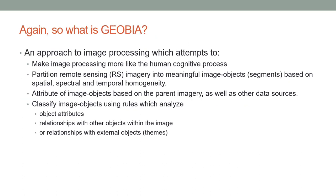Geobia is an approach to image processing that employs an attempt to make image processing more like the human cognitive process. It begins with partitioning remotely sensed imagery into meaningful image objects or segments based on their spatial, spectral, and temporal homogeneity. Then there is the attribution of properties, quantities, and characteristics to image objects based on the parent remotely sensed imagery and other data sources. This is followed by classification of image objects using rules that analyze object attributes and their relationships with other objects.